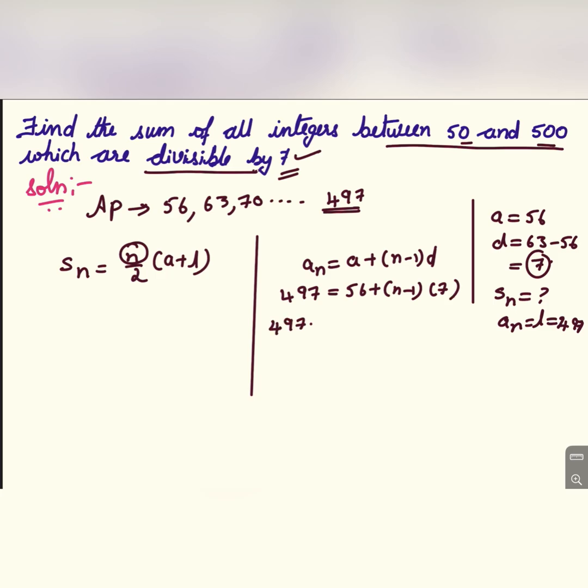So 497 minus 56 is equal to n minus 1 into 7. 497 minus 56 is 441 divided by 7 is equal to n minus 1. So 63 is equal to n minus 1. Therefore 63 plus 1 is equal to n. n is equal to 64.